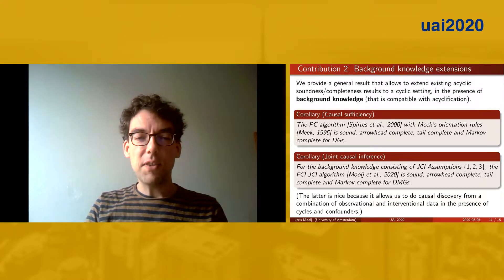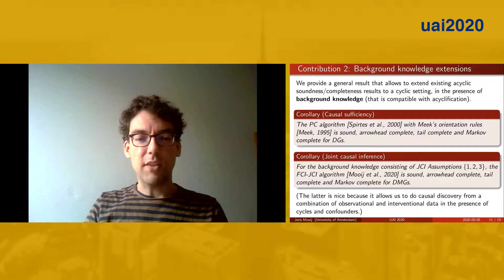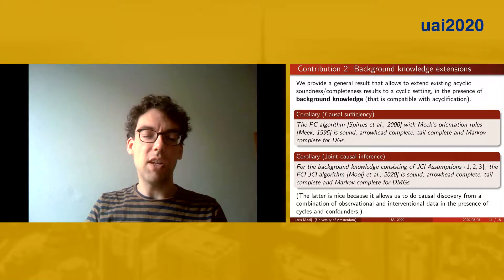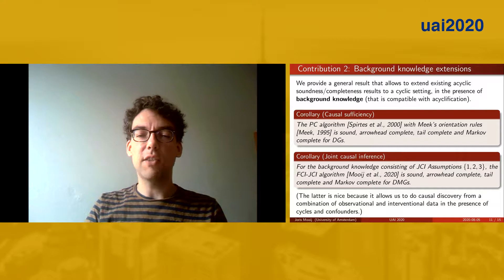And the second is that the FCI-JCI adaptation of FCI for the joint causal inference framework that we recently proposed is also sound and complete for DMGs, which is nice because you can now do causal discovery from a combination of observational and interventional data in the presence of cycles and confounders.